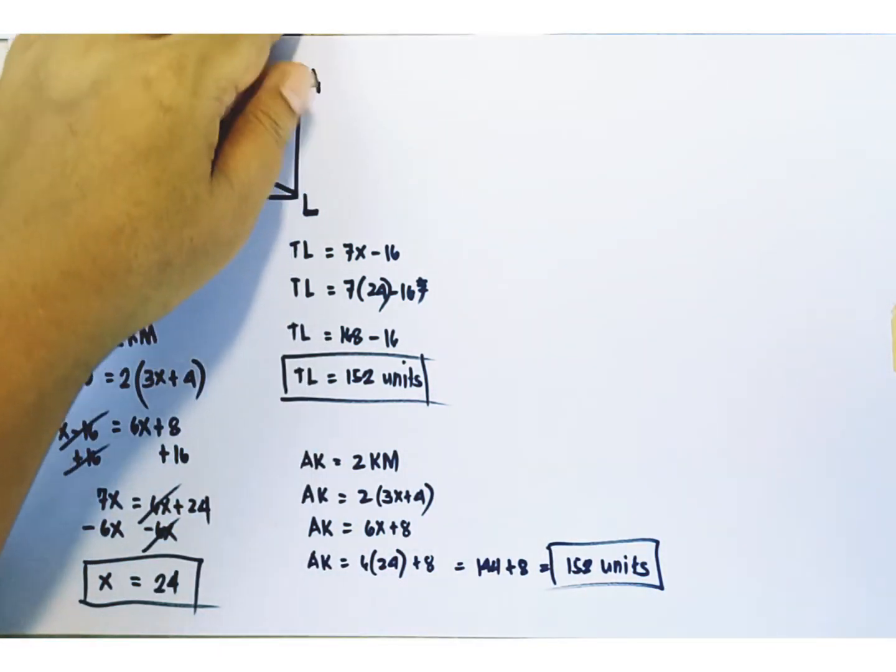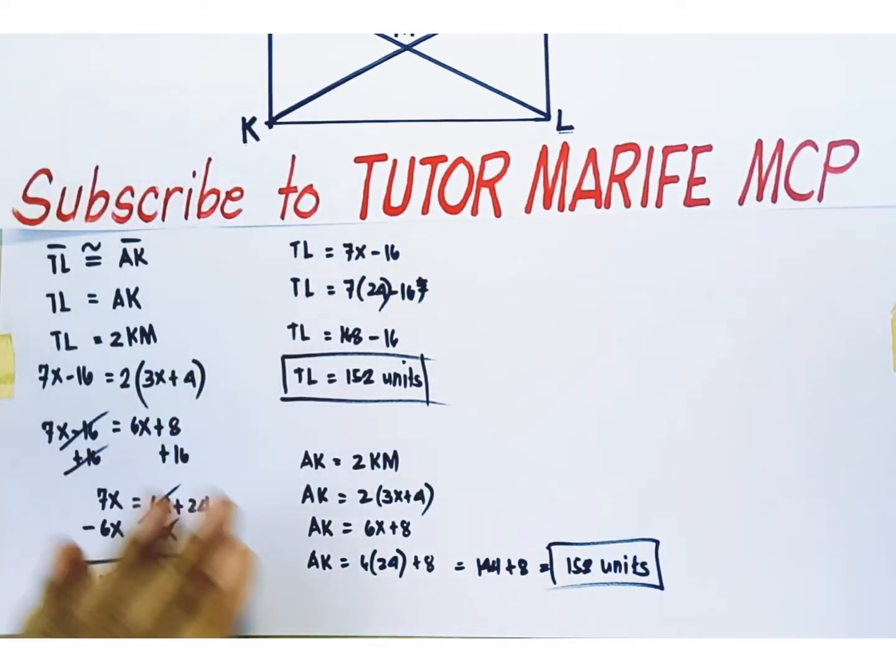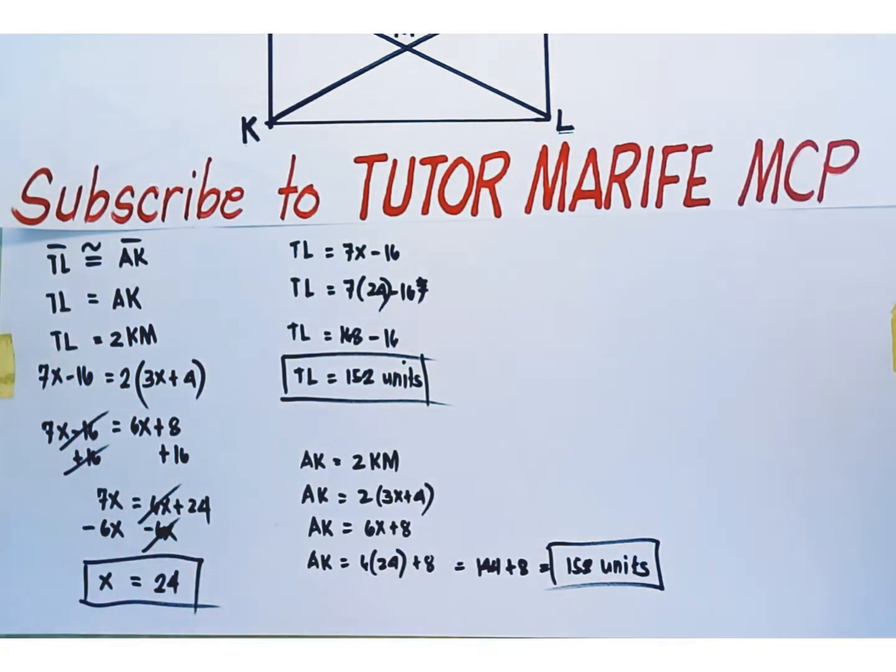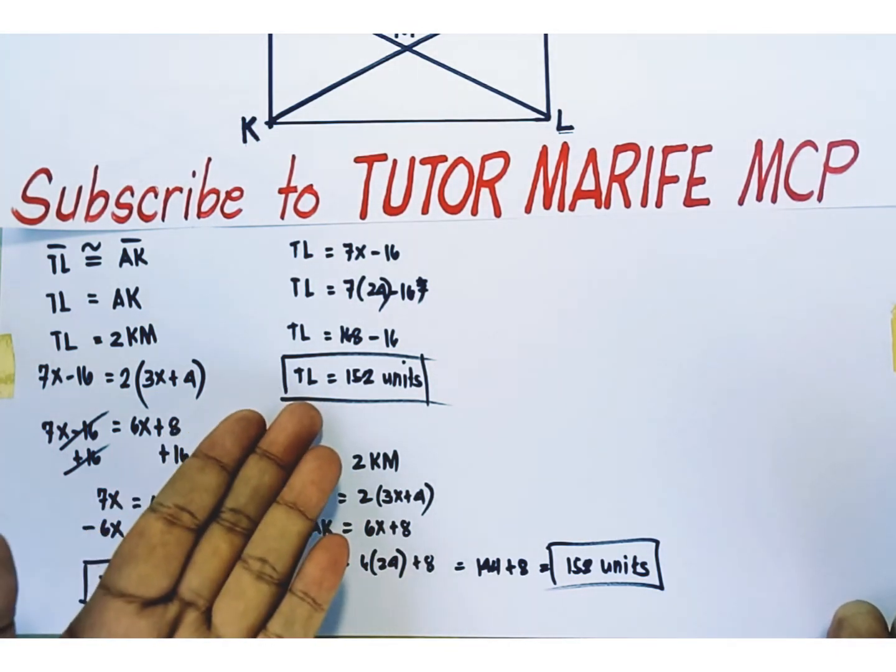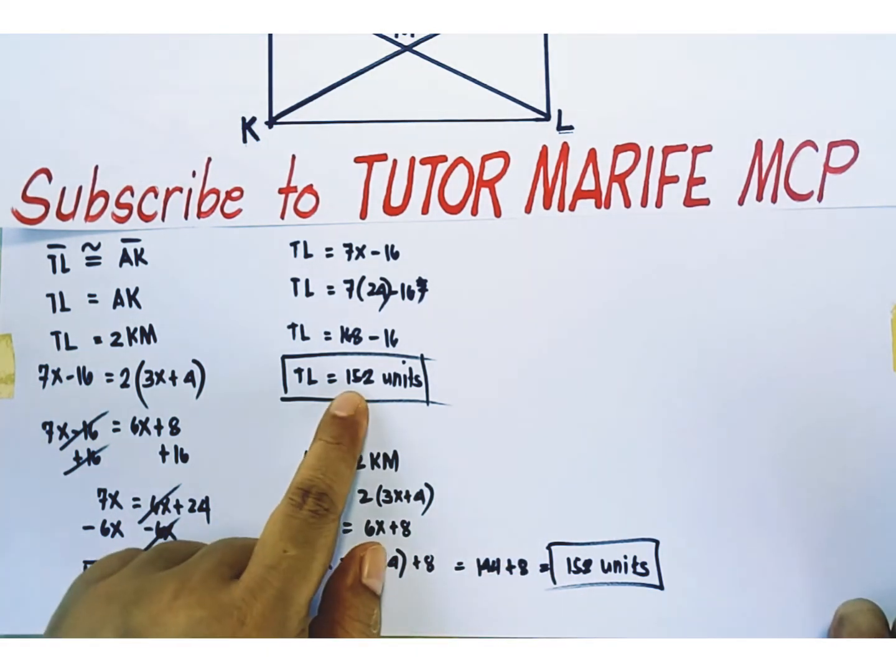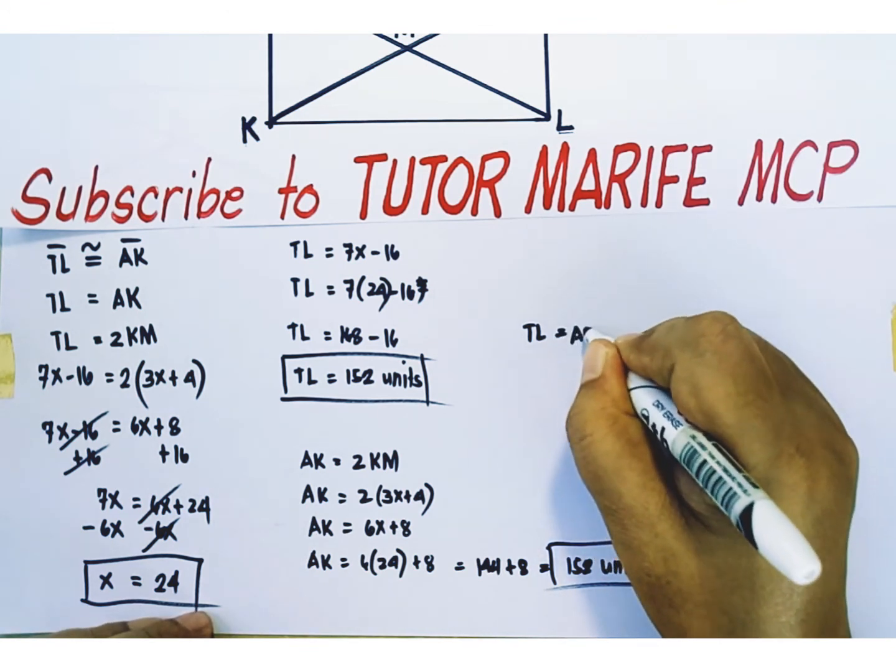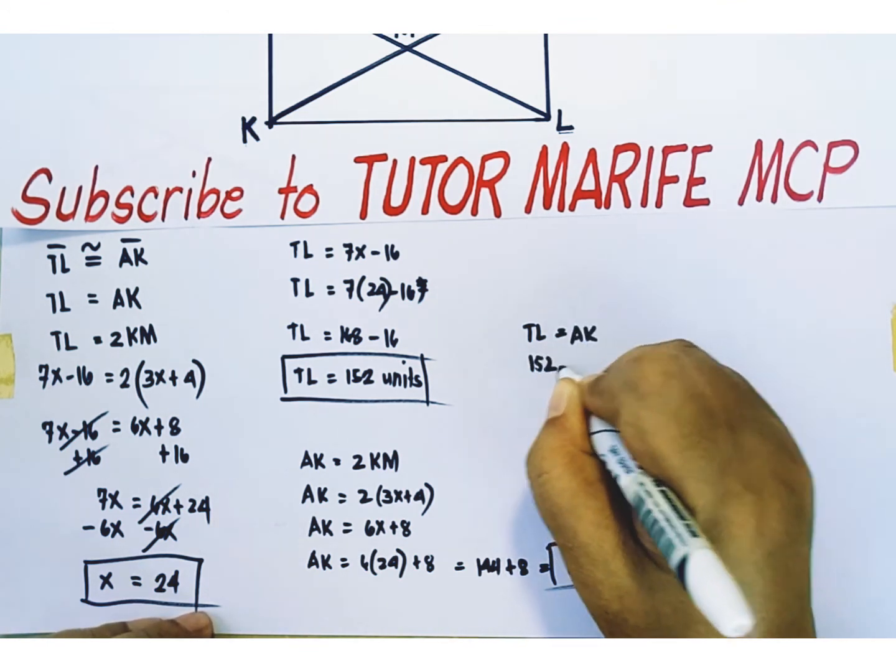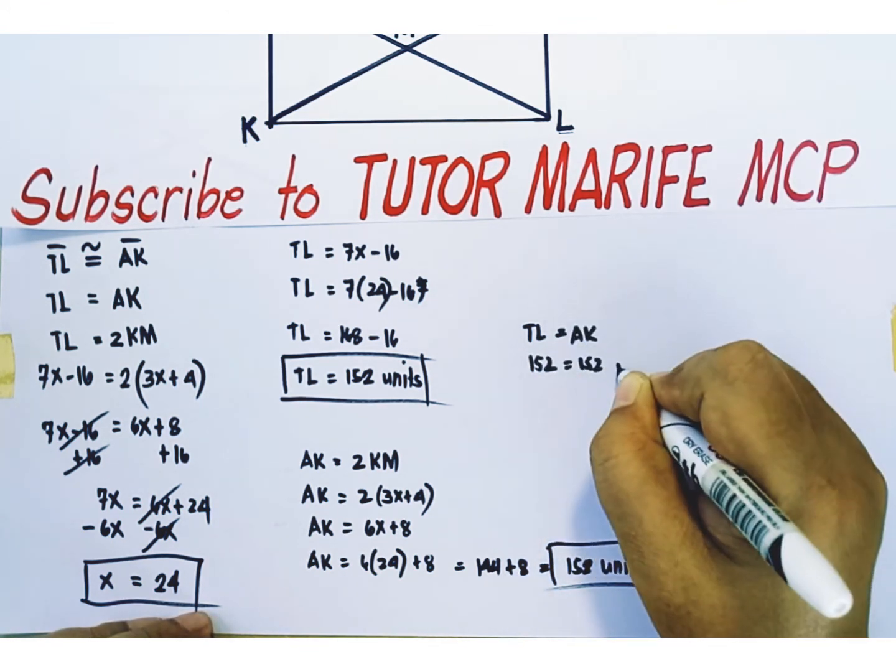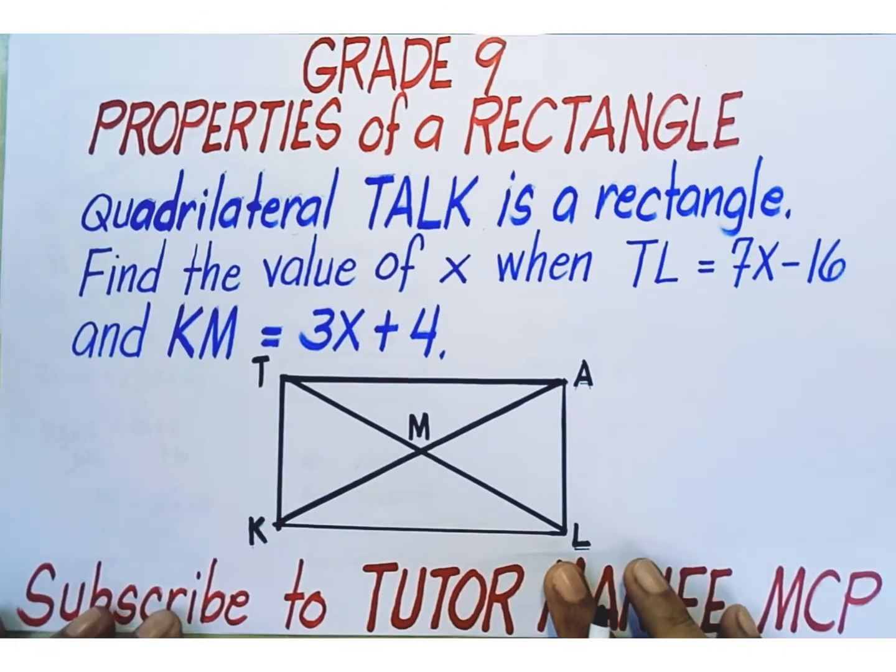We obtain the same length. Which is actually correct because the property of a rectangle states that diagonals are congruent or they have equal measures. So, TL is indeed equal to AK. 152 is equal to 152. We validated our x. x equals 24 is correct.